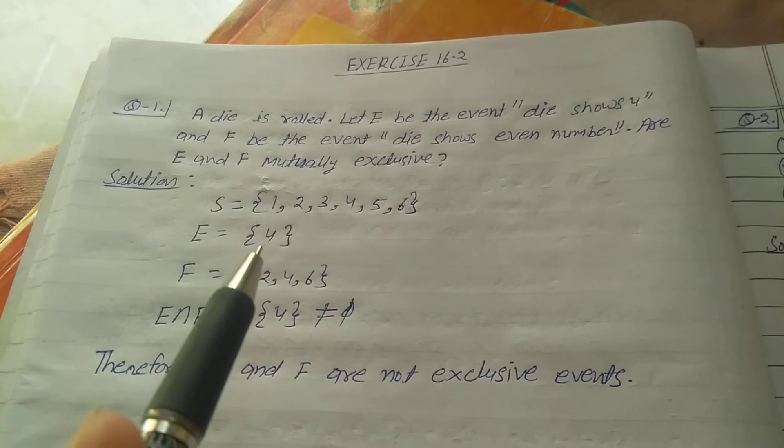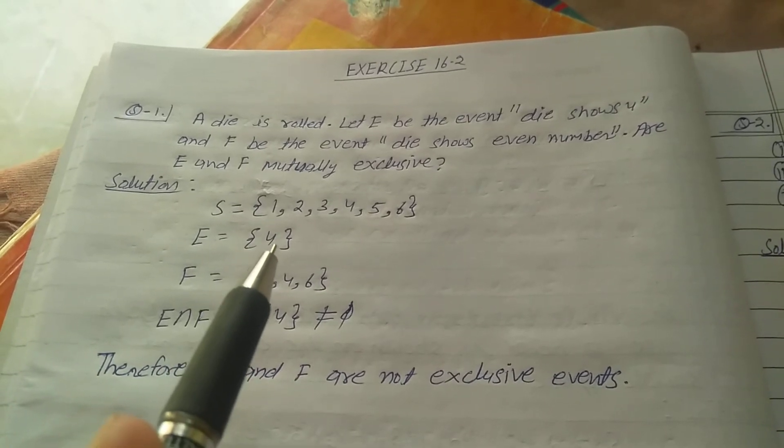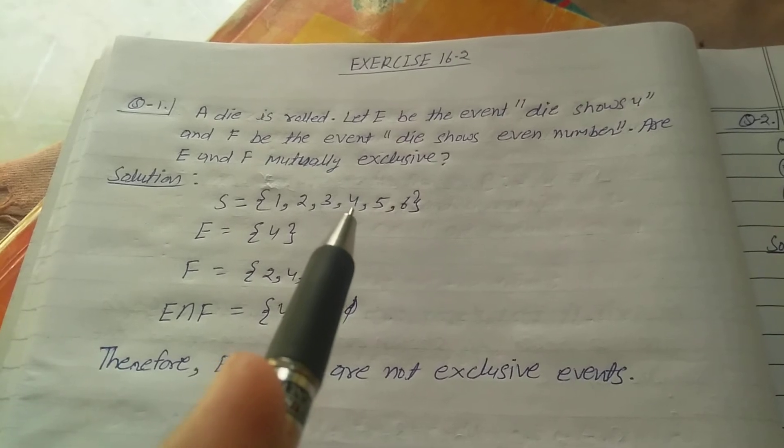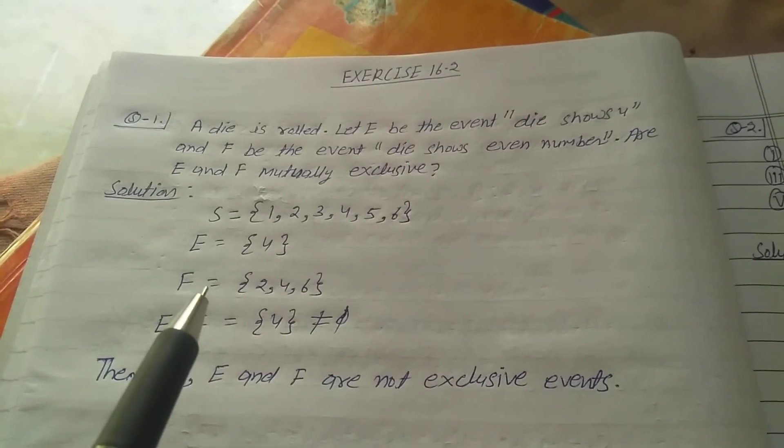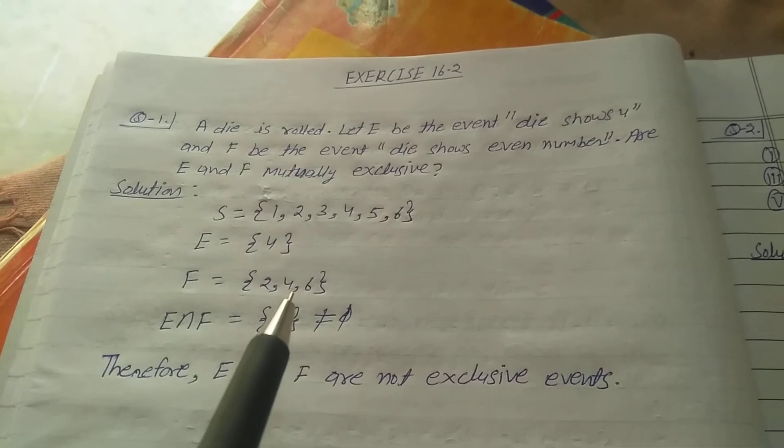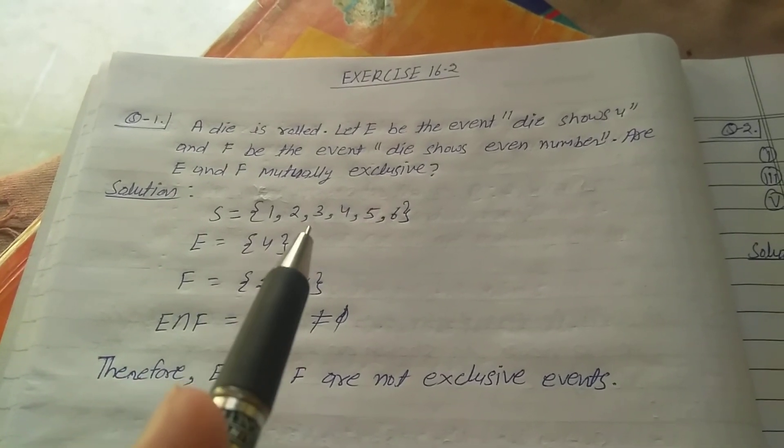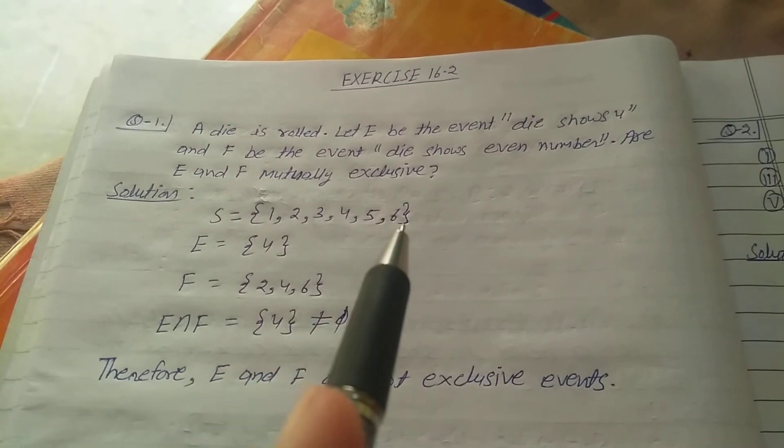Event E equals {4} because showing only 4 is one event. And F equals {2, 4, 6}, meaning even numbers in the sample space are 2, 4, and 6.